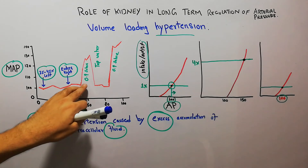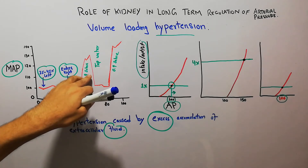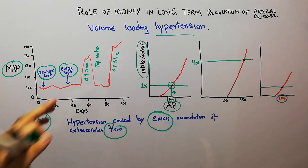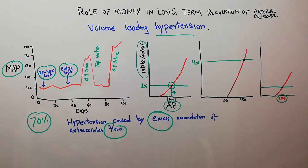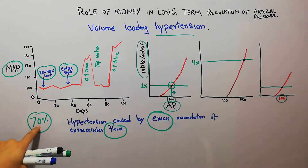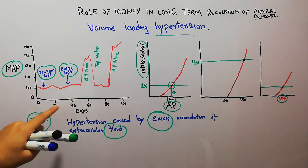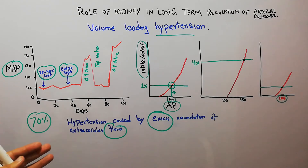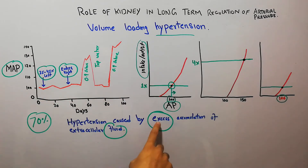Now the dog is given 0.9% saline — water containing salt. This salty water cannot quench thirst because salt cannot be easily removed from the body, and on top of that the kidneys are not functioning properly since 70% have been removed. So salt is being loaded into the body of the dogs, leading to accumulation of excess fluid.